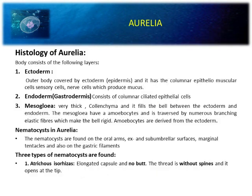The histology of Aurelia: the body consists of three layers. First is the ectoderm, second is the endoderm, and third is the mesoglea. Mesoglea is a very thick colonymous layer containing amoebocytes. The ectoderm is the outer covering, made up of columnar epithelial muscular cells — including sensory cells, nerve cells — and produces mucus. The endoderm is also known as gastrodermis and consists of columnar ciliated epithelium.